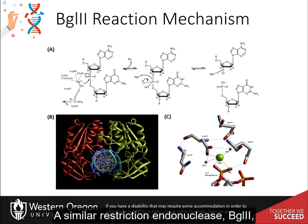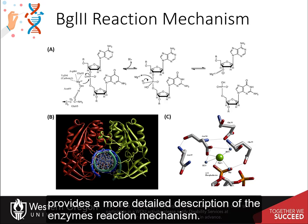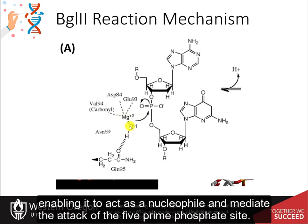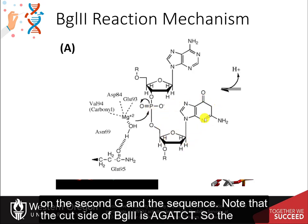A similar restriction endonuclease, BglII, provides a more detailed description of the enzyme's reaction mechanism. In the first part of the reaction, the magnesium ion helps to coordinate the water molecule, enabling it to act as a nucleophile and mediate the attack of the 5' phosphate site on the second G in the sequence.